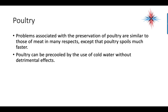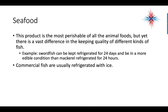For poultry, the problems associated with preservation are similar to those of meat in many respects, except that poultry spoils much faster. Poultry can be pre-cooled using cold water without any detrimental effects. Seafood is the most perishable of all animal foods, yet there's a vast difference in the keeping quality of different kinds of fish. For example, swordfish can be kept refrigerated for 24 days and be in a more edible condition than mackerel refrigerated for the same period. Commercial fish are usually refrigerated with ice.